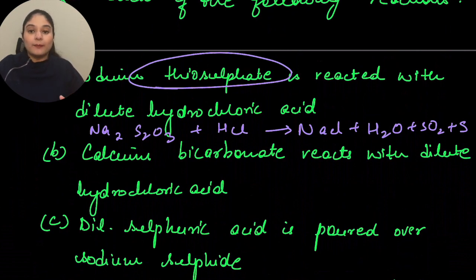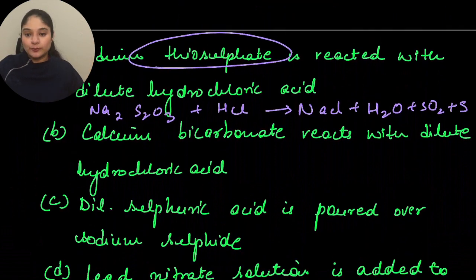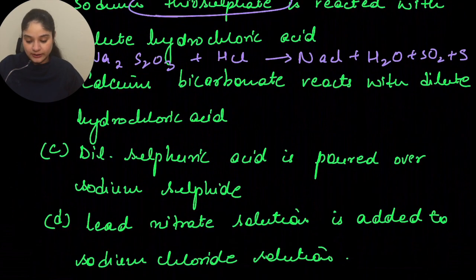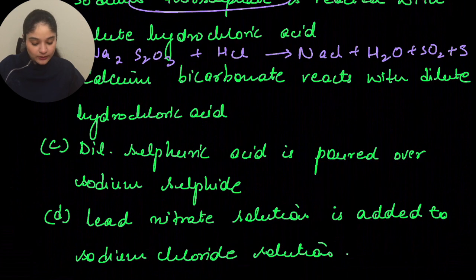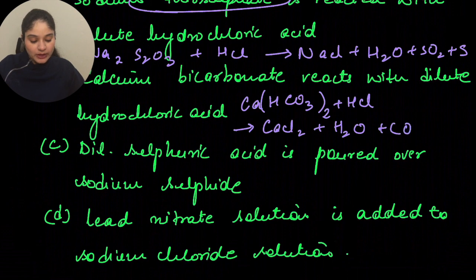Part B: calcium bicarbonate reacts with dilute hydrochloric acid: Ca(HCO₃)₂ + HCl gives CaCl₂ + H₂O + CO₂.